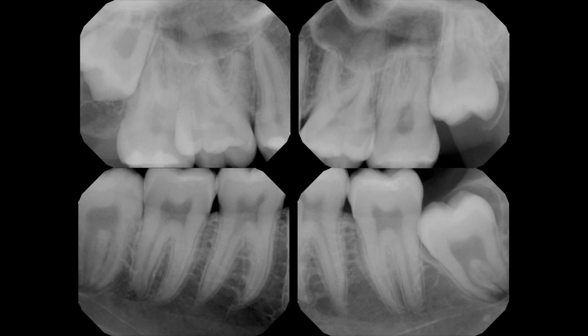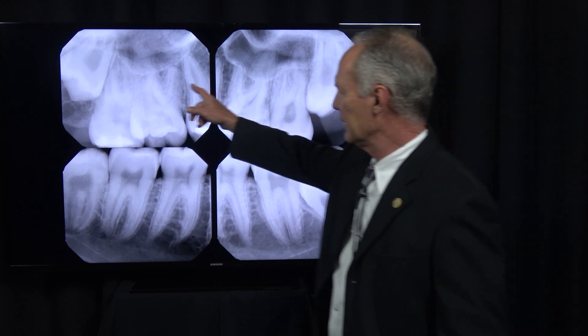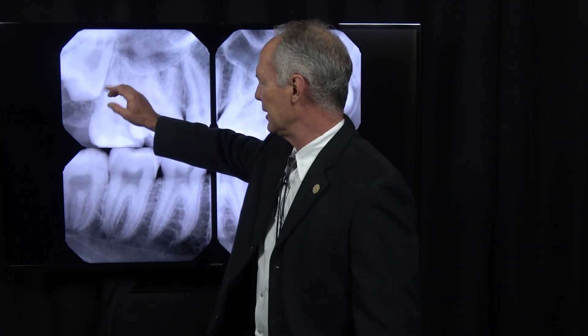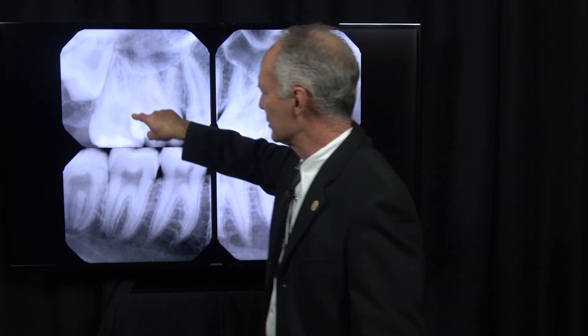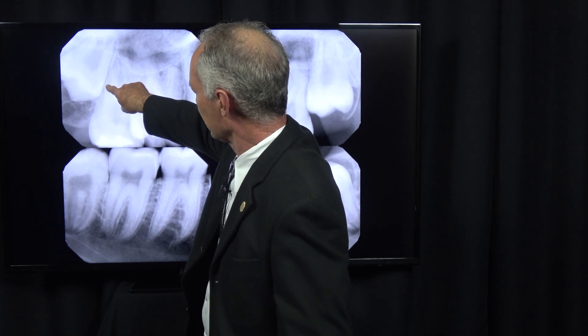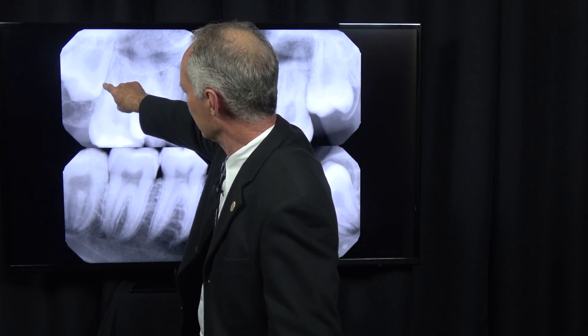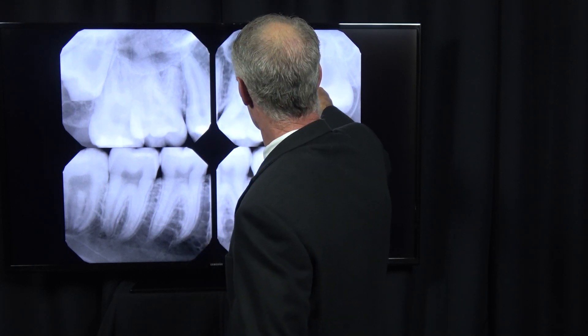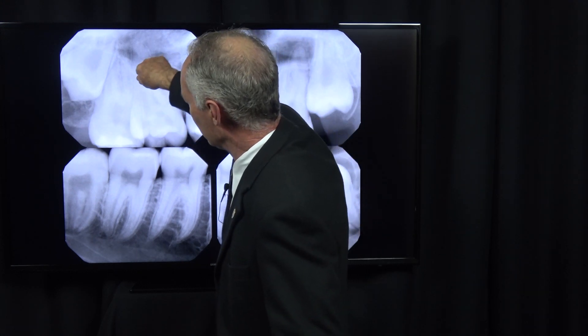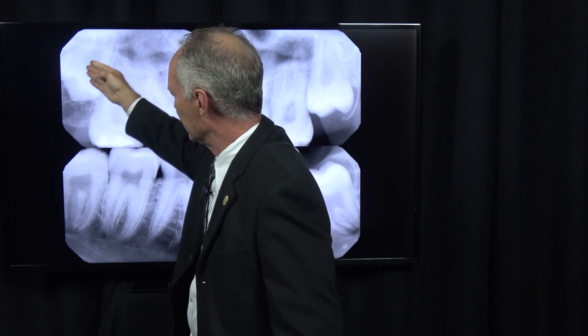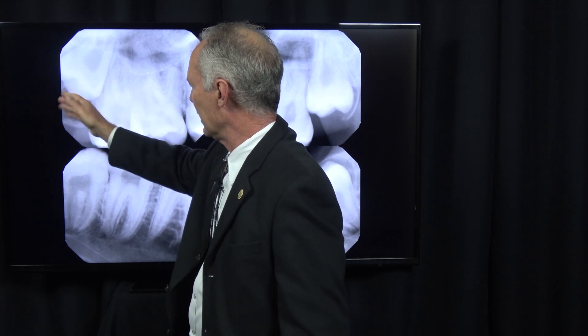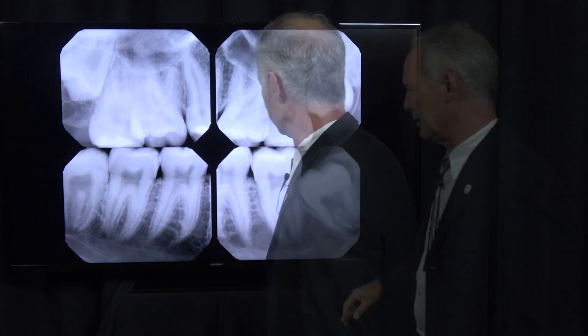Let's do a skull drill before we start. These maxillary wisdom teeth should be fairly straightforward. We'll just place a periodontal elevator here and here and begin the elevation. Then come back with a 301 elevator and the tooth should just roll right out. Be sure you put a 2x2 in the mouth to protect the airway on both sides.